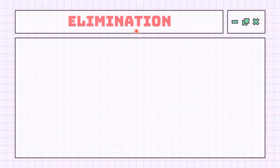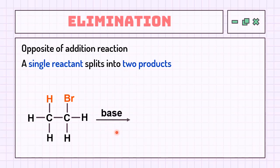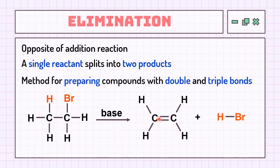Elimination reactions involve the removal of a pair of atoms or a group of atoms from a molecule — the opposite of addition reactions. Usually, through the action of acids, bases, or metals, and in some cases by heating to a high temperature, we form compounds with multiple bonds from this reaction.